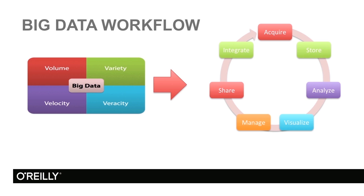Sometimes data will arrive in batch mode — for example, when we get files containing sales records. Sometimes the data will come as a stream, for example from sensors generating data or collecting Twitter data in real time. We need to store this data, and traditional databases do not provide a good answer for that. We will see different mechanisms developed to store this data, where it is spread in a fault-tolerant and reliable way across many machines, which poses challenges.